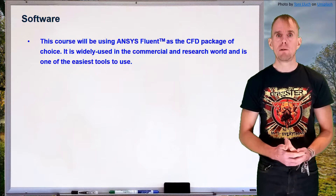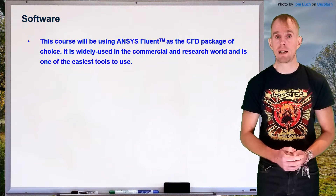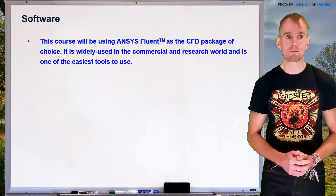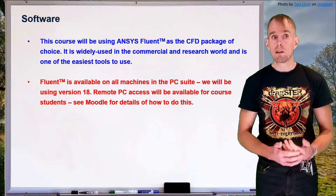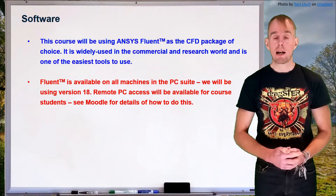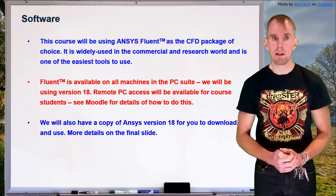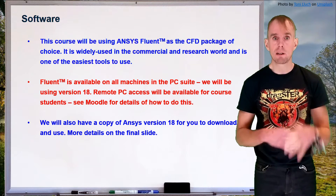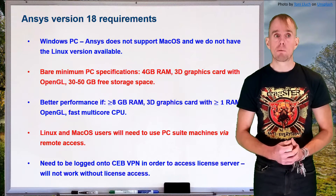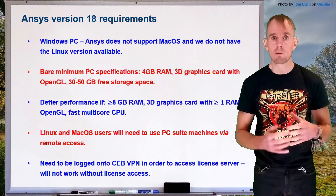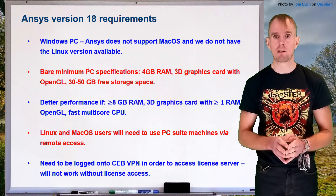In terms of software, this course will be using Ansys Fluent as the CFD package of choice. There are many different CFD packages available, but Ansys Fluent is widely used in both commercial and industrial research and is one of the easiest tools to use. For accessing Fluent, there are two options: it is available on all machines in CEB's PC suite via remote access, with details on Moodle. Alternatively, you can download a copy of Ansys to use on your own machine. Version 18 of Ansys will run on a Windows PC; Ansys does not support Mac OS and we don't have the Linux version, so Mac or Linux users will need to use the remote access route.